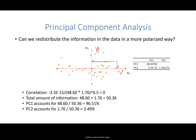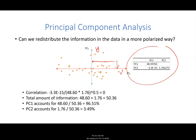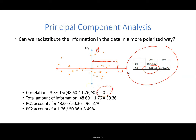Before we get into these values, let's look at the distribution of information between PC1 and PC2. I have asked Excel to compute the covariance matrix for PC1 and PC2. The variance for PC1 is now 48.60, and the variance for PC2 is now 1.76. The covariance is so small it is almost zero. As a result, the correlation between PC1 and PC2 is also almost zero, suggesting there is no correlation between PC1 and PC2.